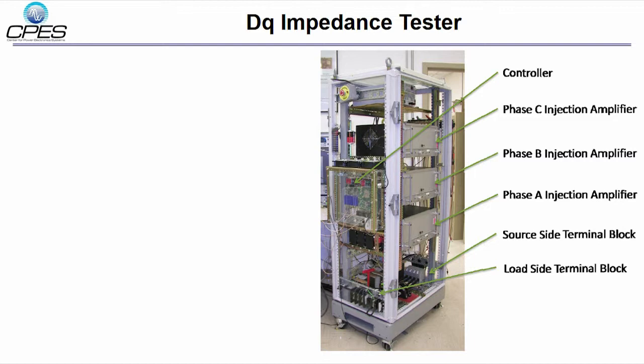Before we see the experimental results, let's take a look at the DQ impedance tester. The tester has three main parts. First is the digital controller. Second is the injectors, which are three linear power amplifiers. The third part is the computer, which runs the user interface for impedance measurement.